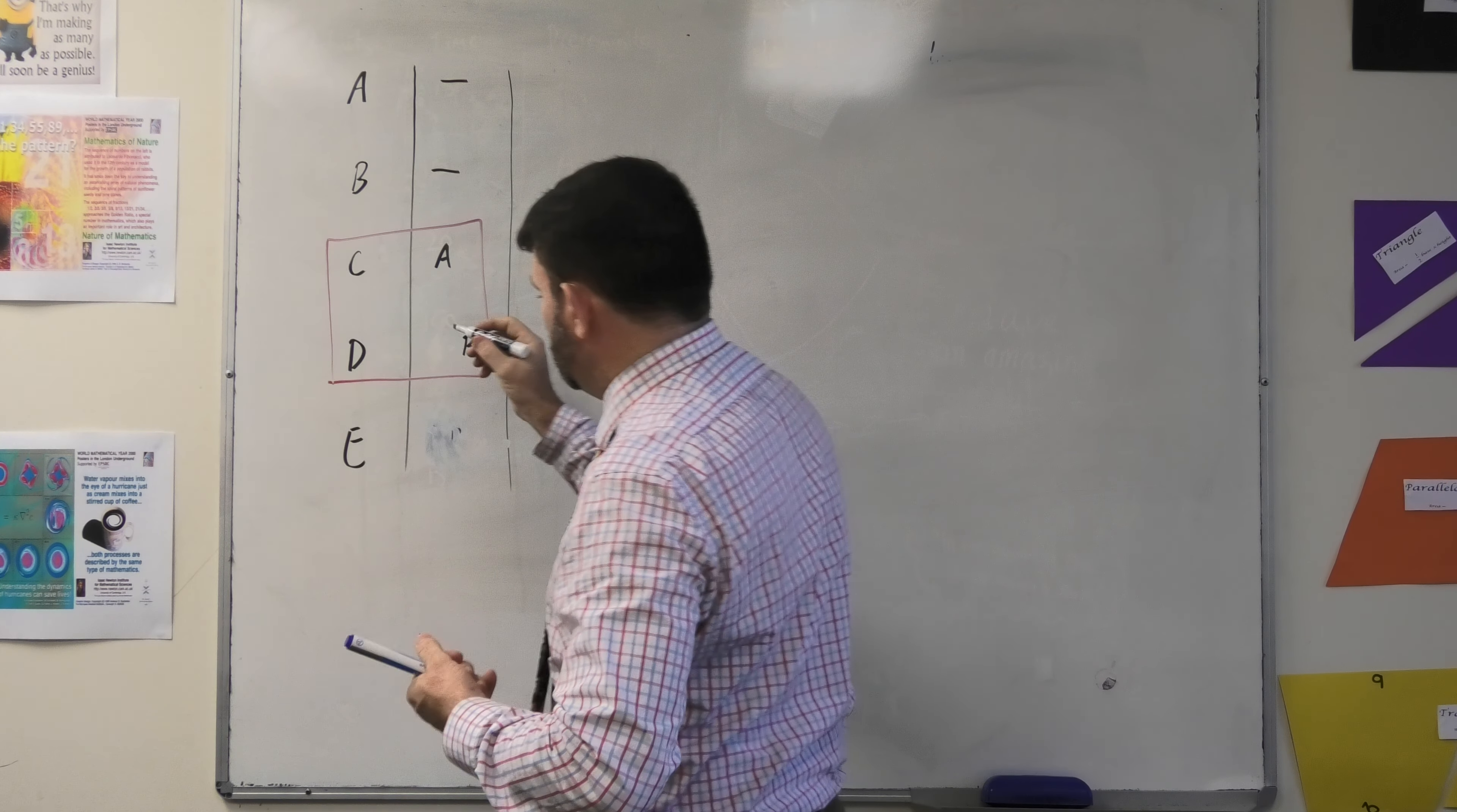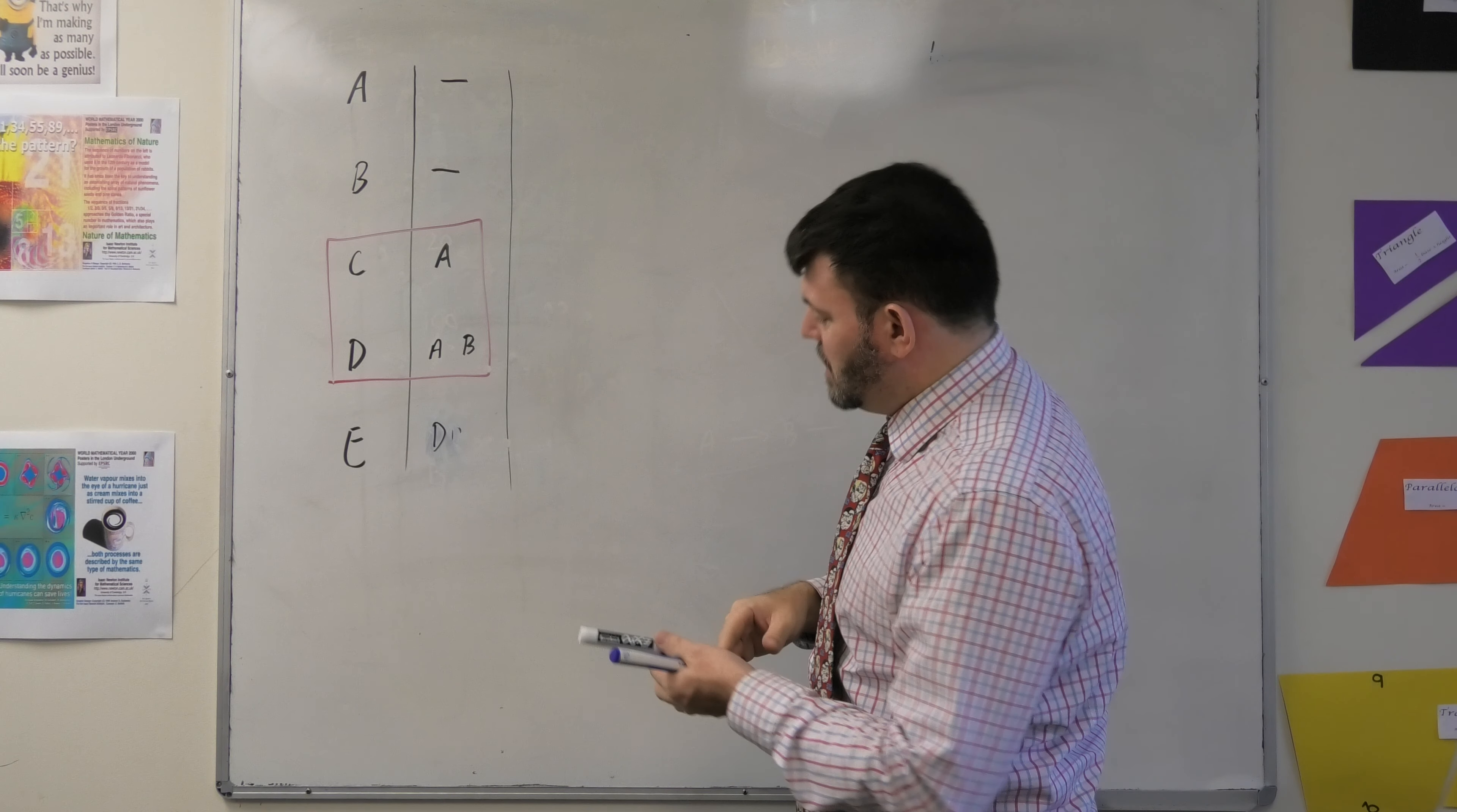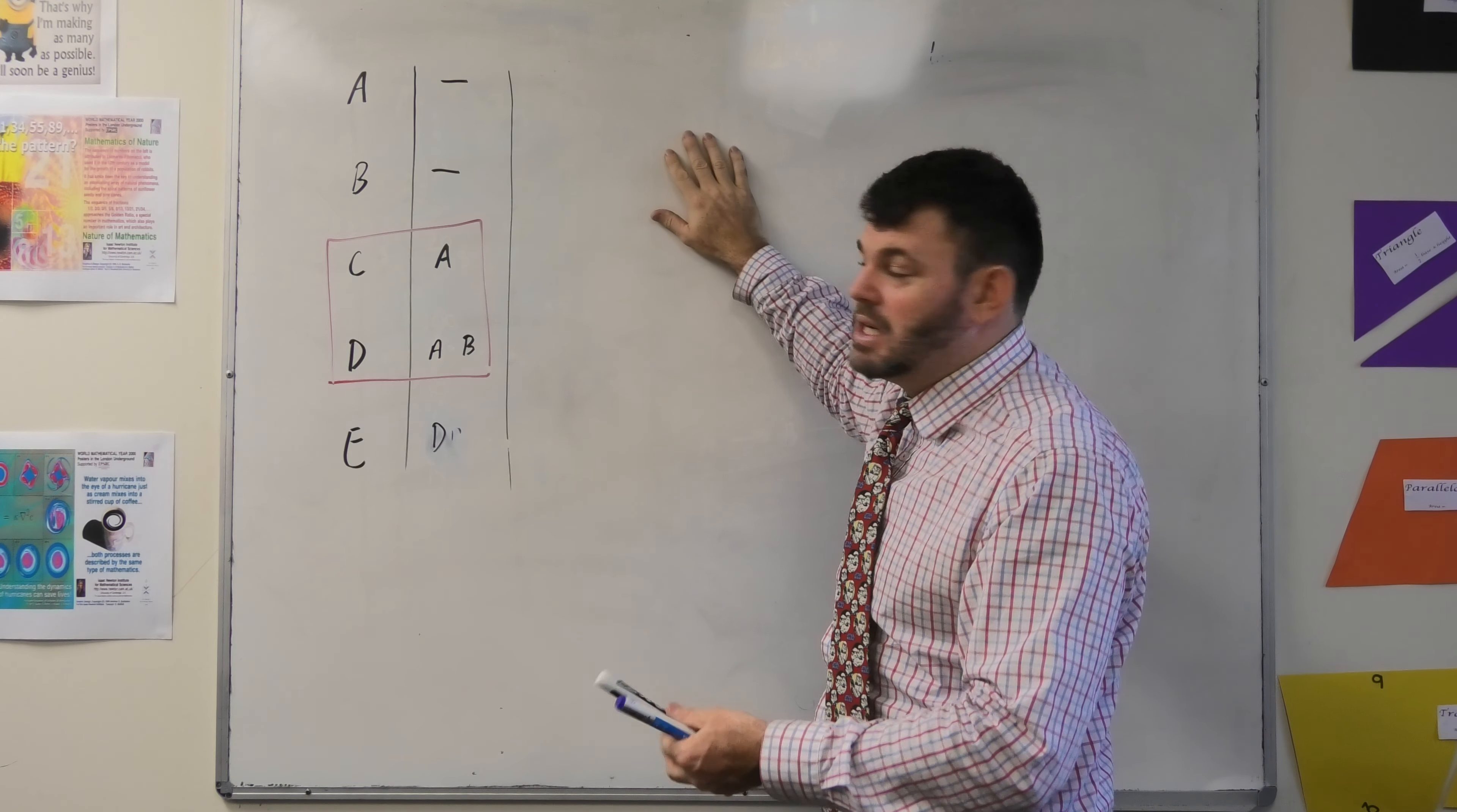But for the example here, we're going to be using the C and D as your activities that rely on A and only D relies on B. Now, I'm going to draw a network and show you what it looks like without the dummy link and then we'll look at it with the dummy link and see how dummy link makes it more clear and makes more sense of the question.